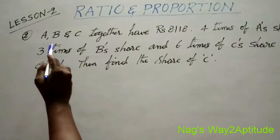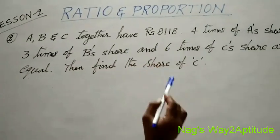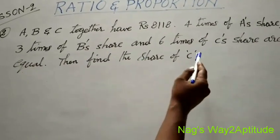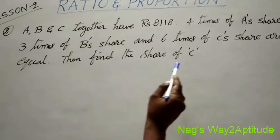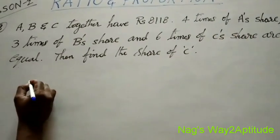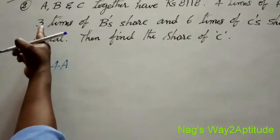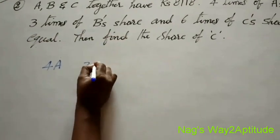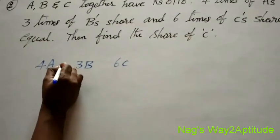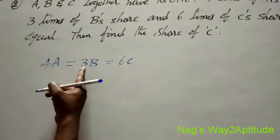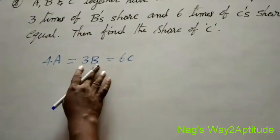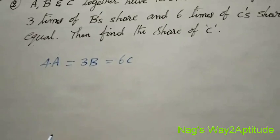Let's go to the second problem. A, b and c together have 8,118 rupees. 4 times of a's share, 3 times of b's share, and 6 times of c's share are equal. Find the share of c. The condition gives us 4a is equal to 3b is equal to 6c. So just like in the previous problem, from 4a=3b=6c, we can easily find a is to b is to c.